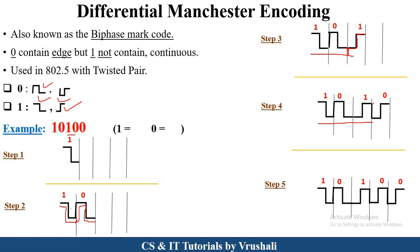The next bit is 0, drawn from the current transmission point using the suitable symbol for 0 — the one that shows a link or continuous data being sent. The last bit is also 0. From this transmission point, the suitable symbol for 0 is chosen and drawn. So this is Differential Manchester encoding: 0 is indicated in two ways, 1 is indicated in two ways, and you choose the symbol that fits perfectly at each transmission point.